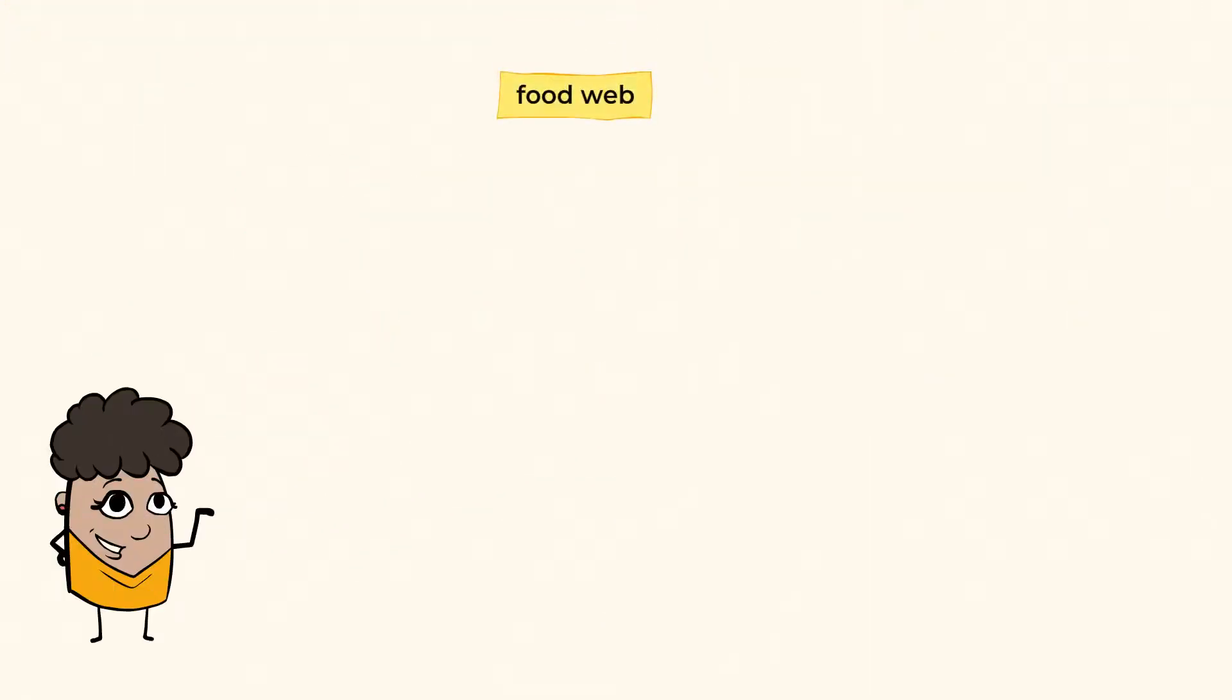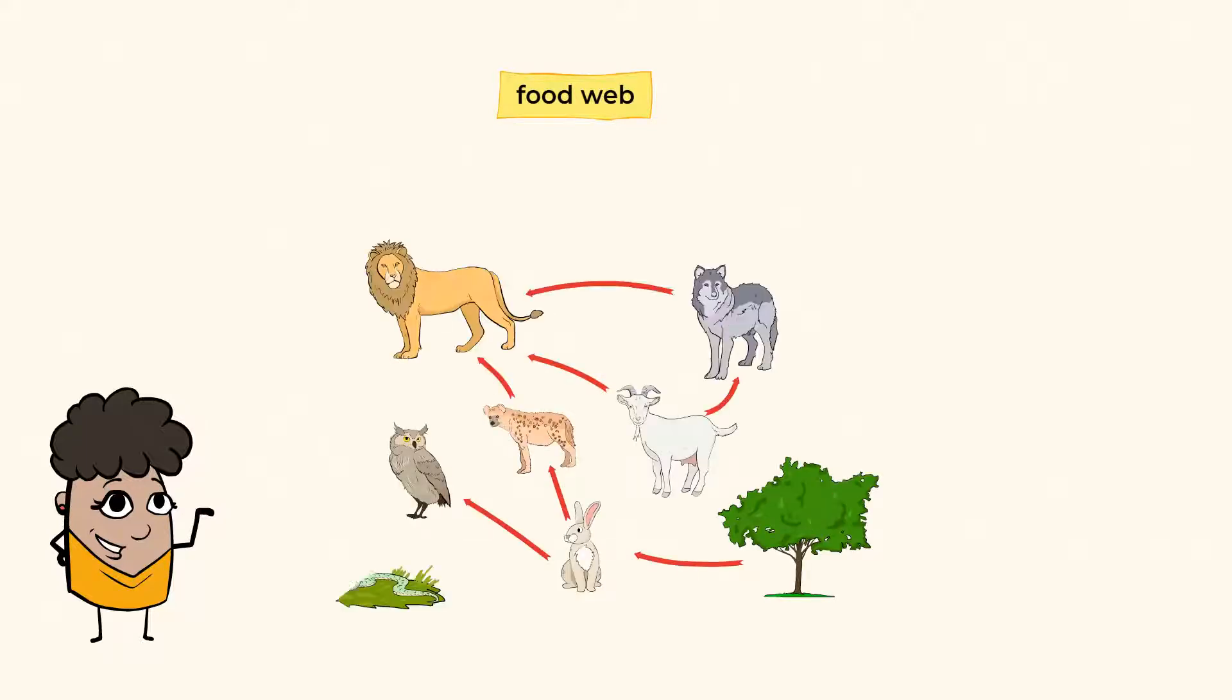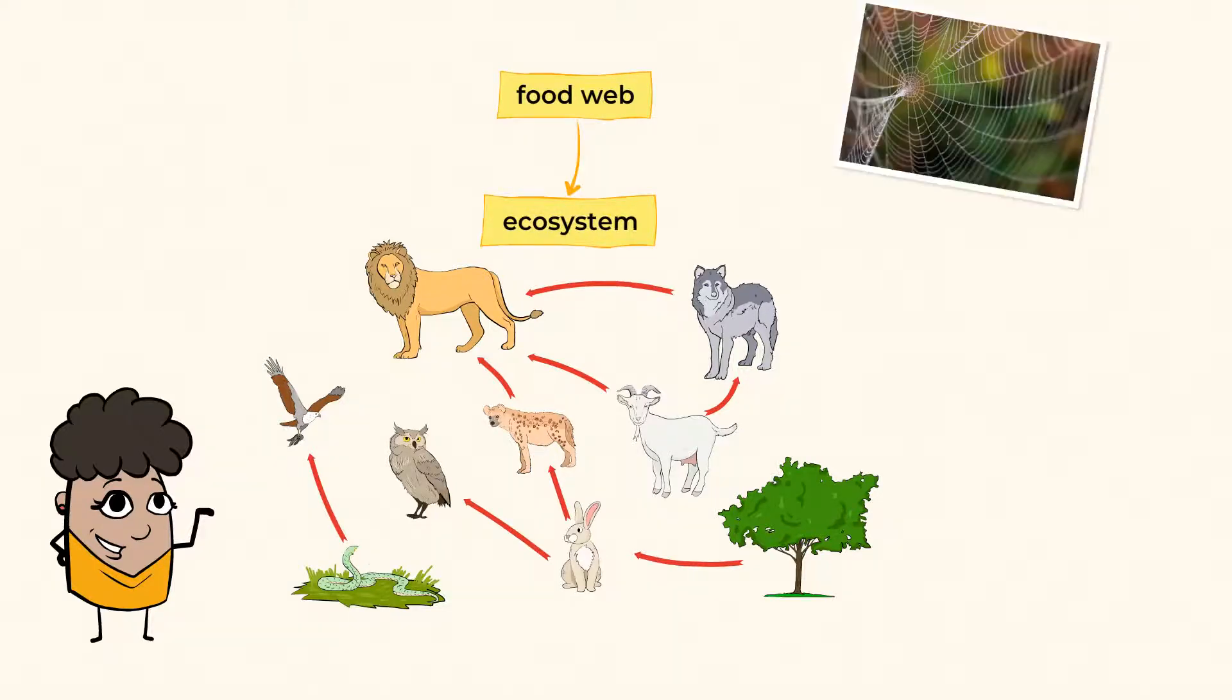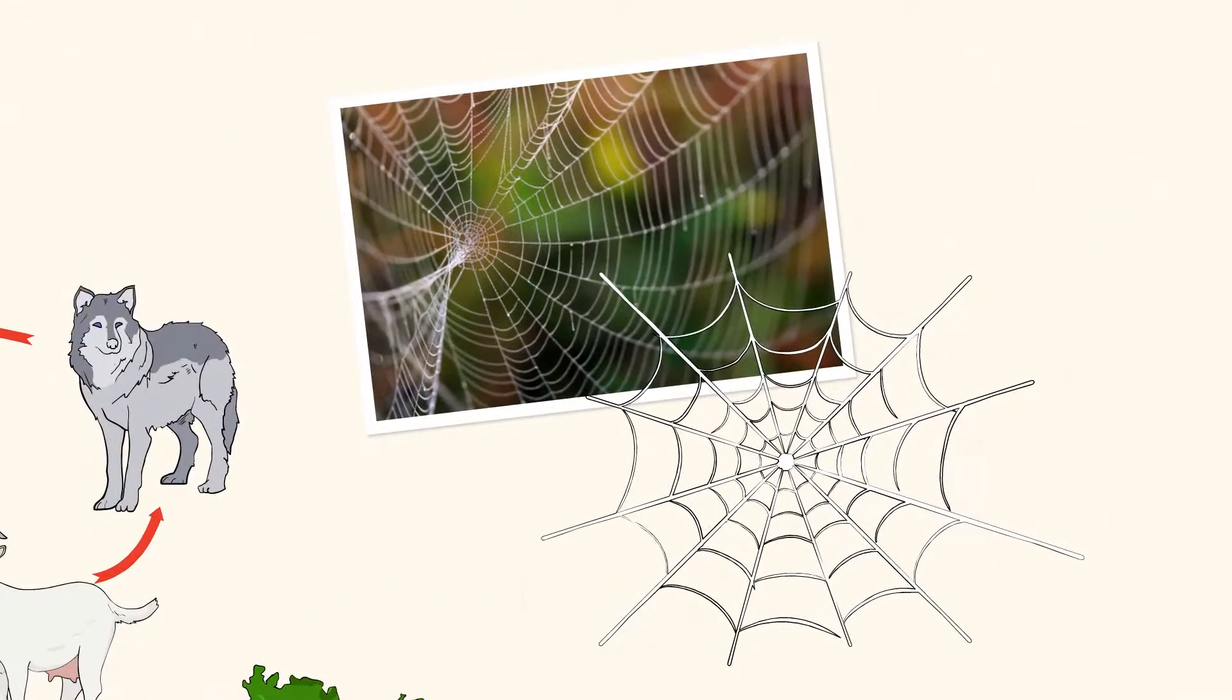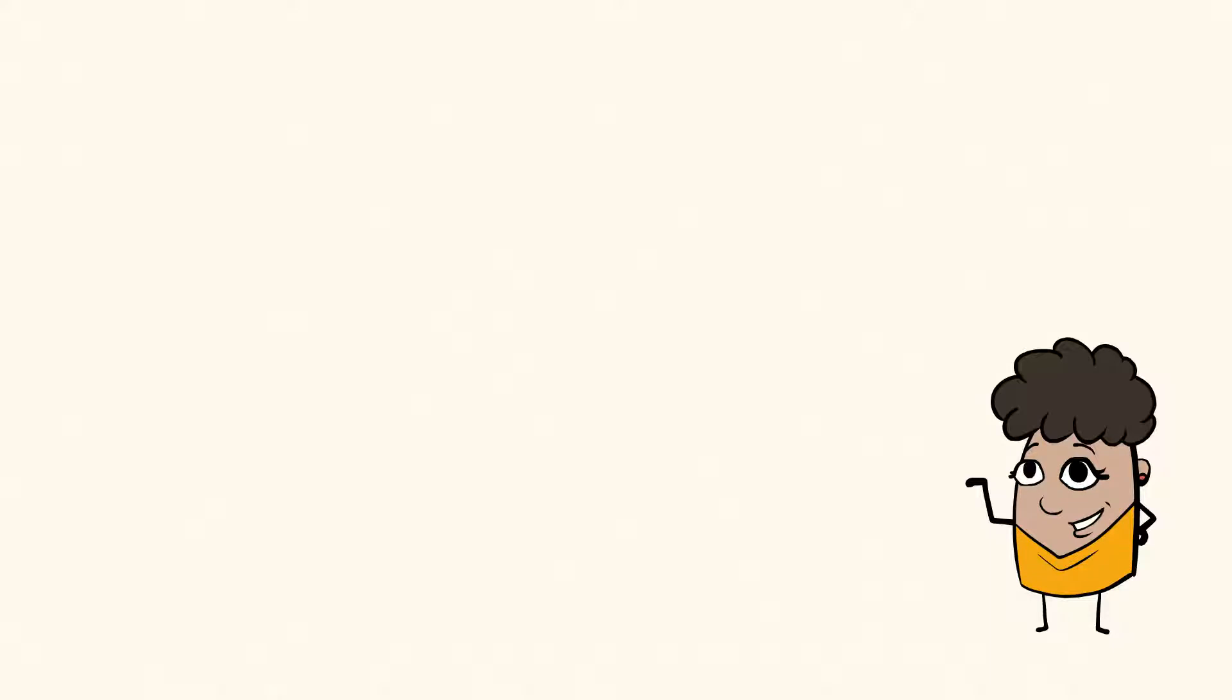Now, a food web is a bit more complex. It's a group of food chains that are all connected in one ecosystem. Again, think of a spider web. It's not just one straight line. It's made up of many threads that are all woven together. Let's take the forest and try to draw an example here.